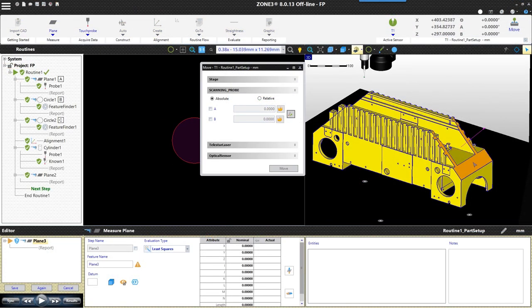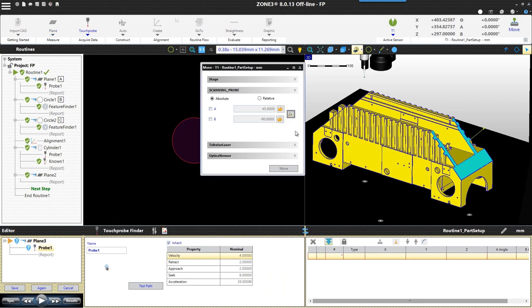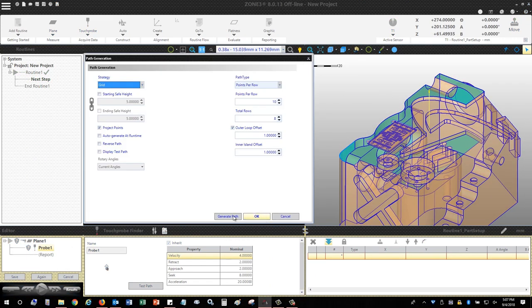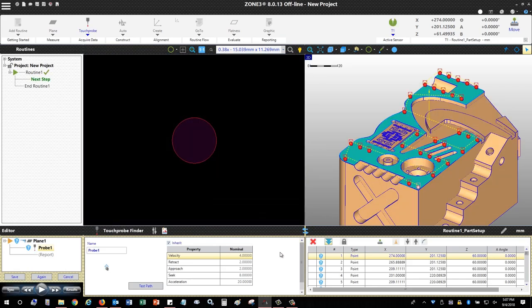Programming new parts is simple using the 3D CAD-based interface. Just select the sensor and the feature and the path can be automatically generated.